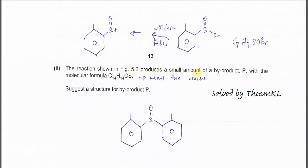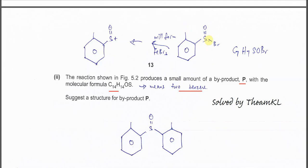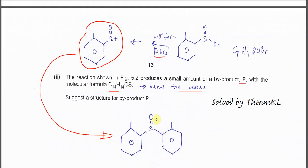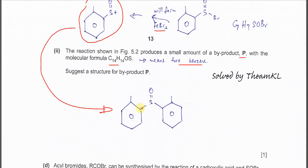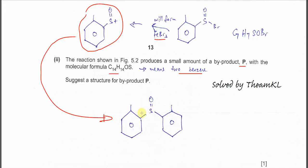For part two, the reaction produces a small amount of byproduct P with molecular formula C14H14OS. This must contain two benzene rings because the carbon count is too high for one. The product further reacts with the catalyst, which takes one bromine, forming a new electrophile that reacts with another methylbenzene molecule by substitution to give product P.